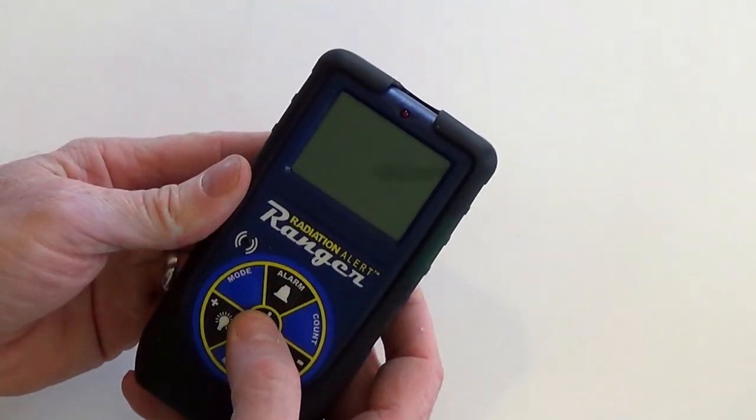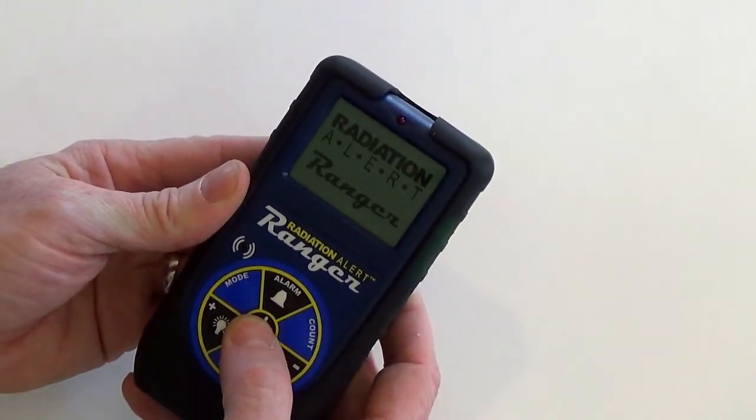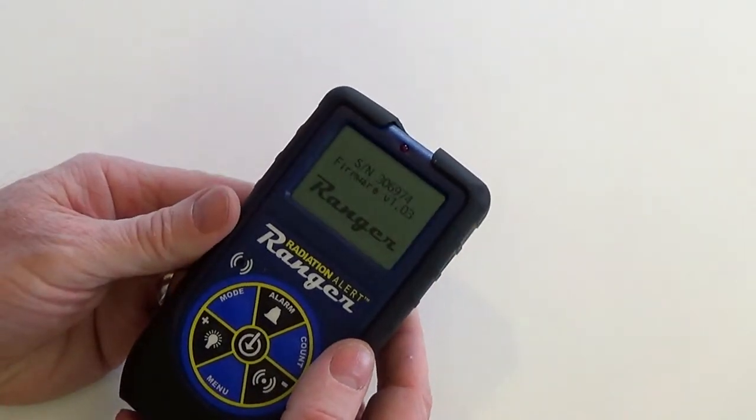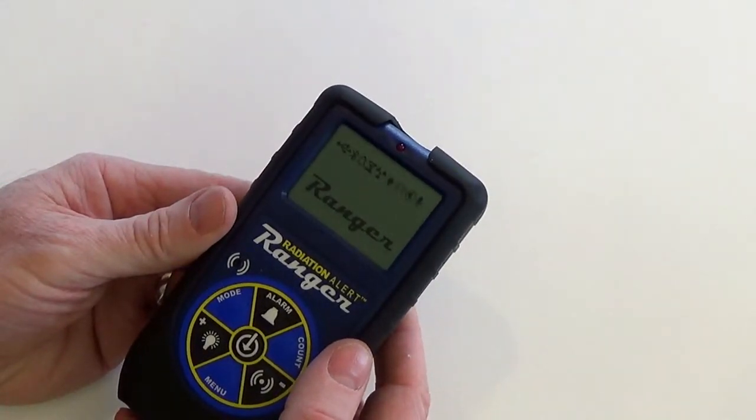To power on the unit, press the power button. The boot cycle will show the serial number of the unit, the firmware version, and the last data calibration, as well as a quick check of all the icons.